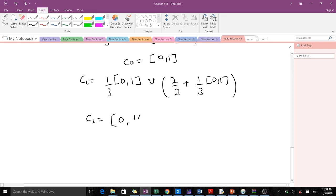So 0/3 is 0 and 1/3 is 1/3, then union we still have 2/3 plus this, which gives us [0, 1/3]. This gives us [0, 1/3].